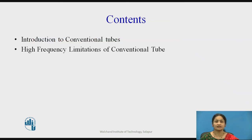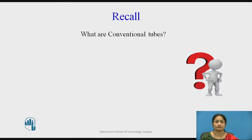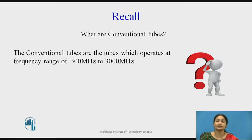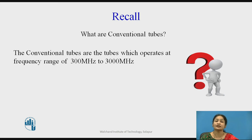These are the contents which will be covered in this video. Before discussing the limitations of high frequency, let us first recall what conventional tubes are. Conventional tubes are tubes which operate at a frequency range between 300 megahertz to 3000 megahertz.